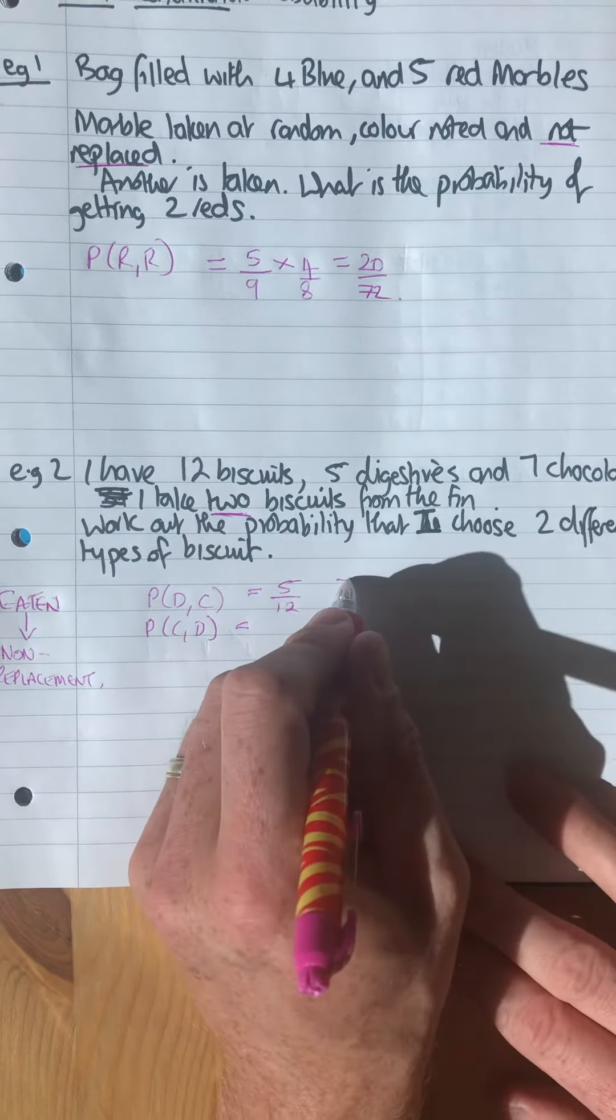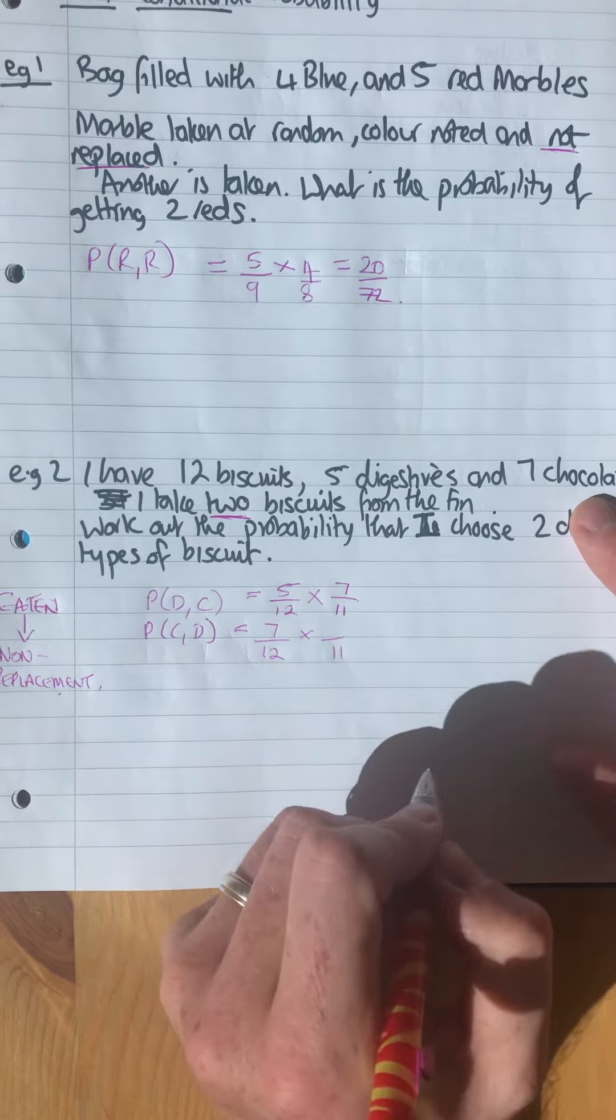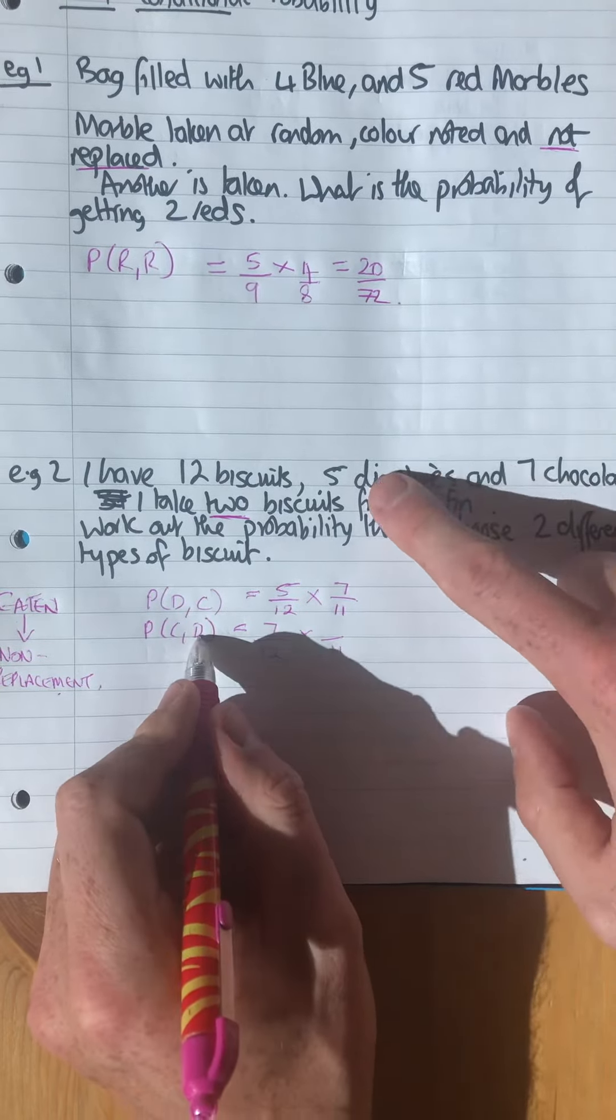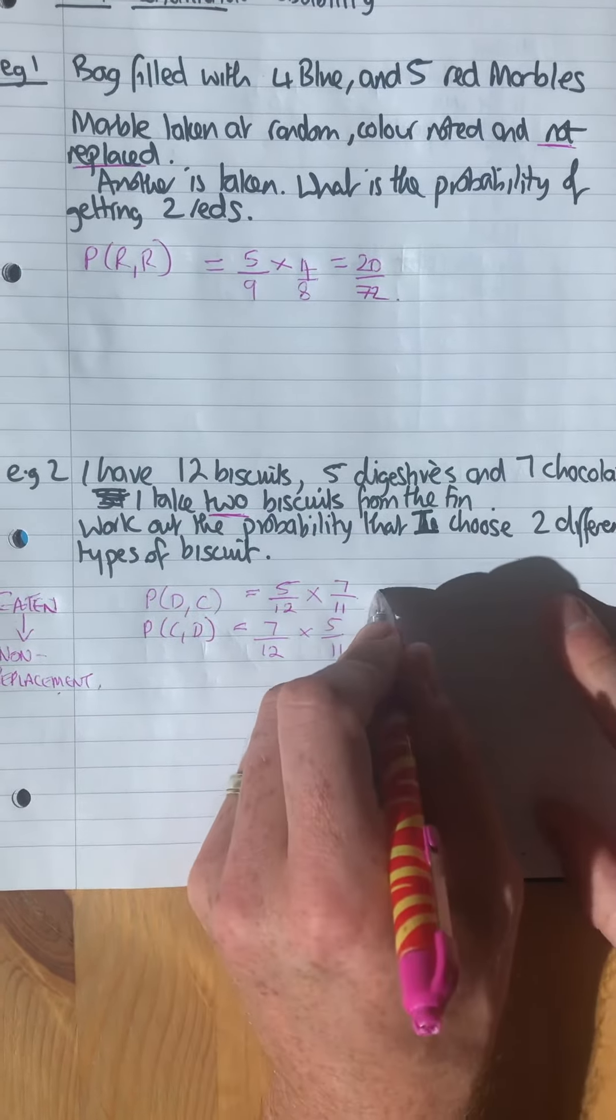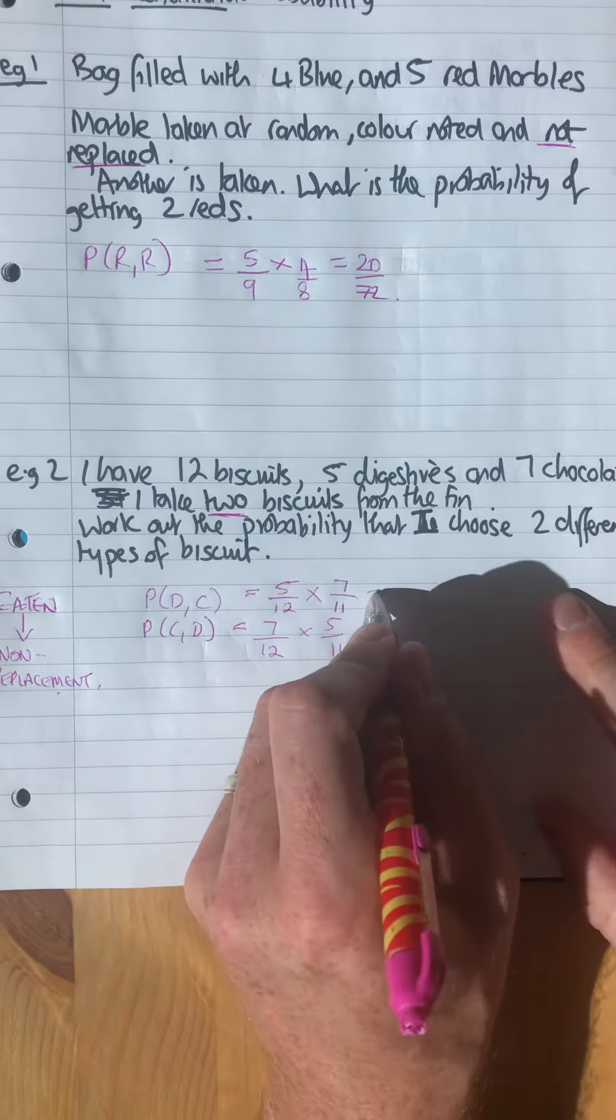And the second one, chocolate first: that's 7 out of 12 times by still 11 the second time, and how many digestives are there? There's 5. So 5 times 7 is 35, and then 12 times 11 is 132. And if you notice, all the numbers are the same. The bottom denominators come out the same, and the top is just the numbers are switched around, it's also 35.